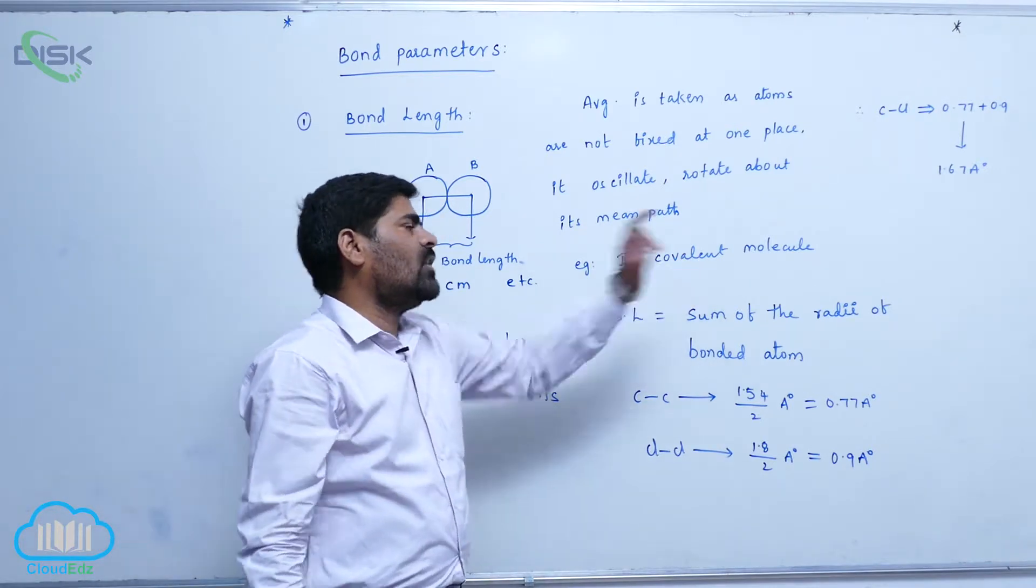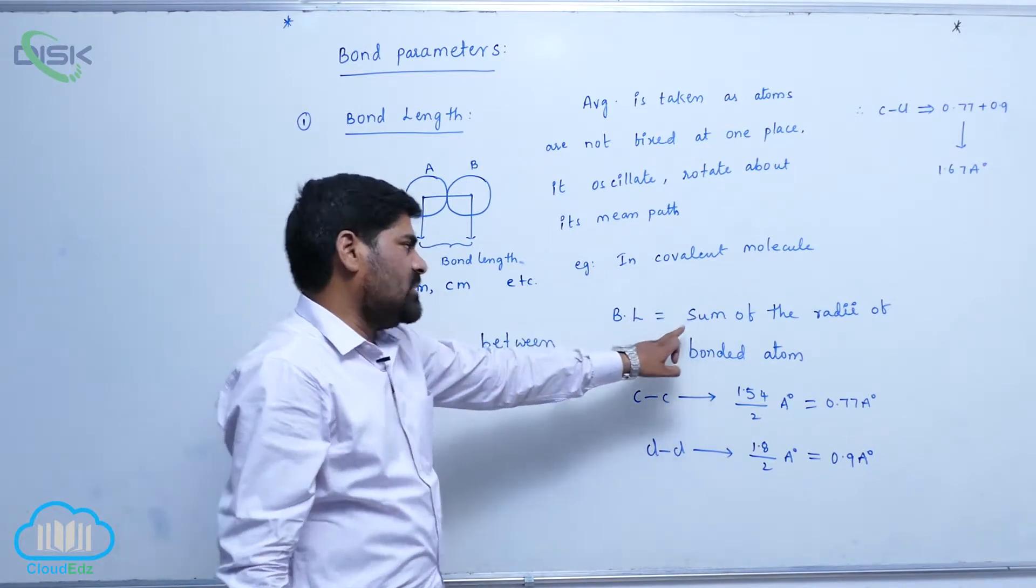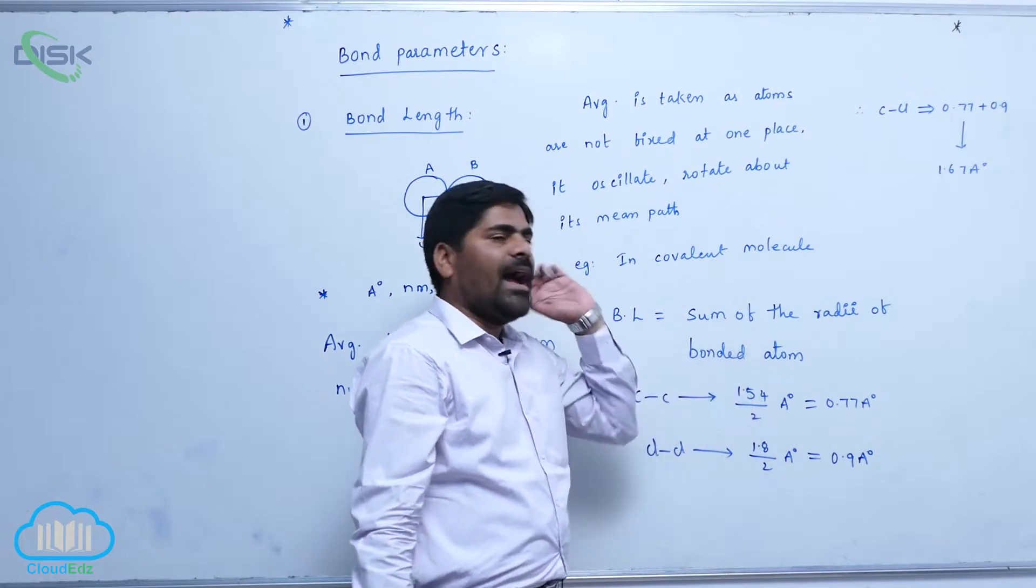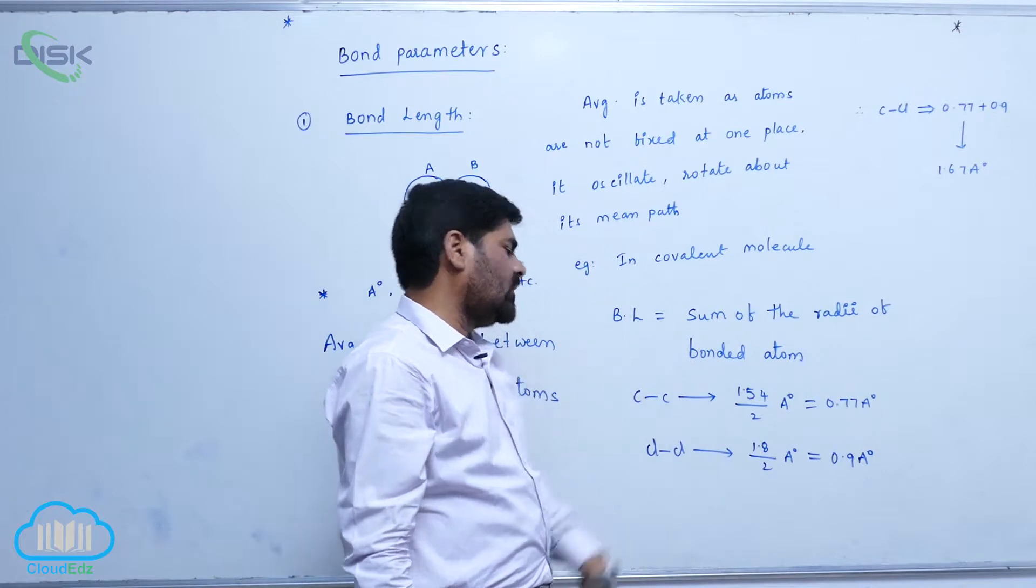So in covalent molecules, bond length equals to sum of the radii of bonded atoms. What is that? Sum of the radii of bonded atoms.